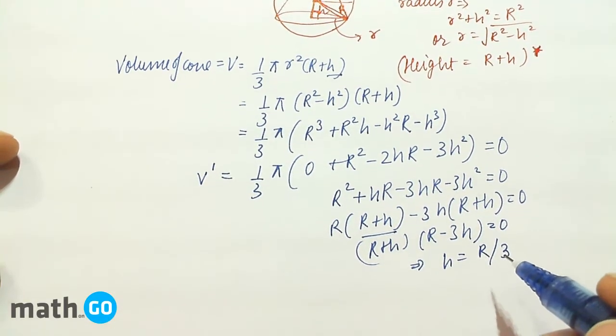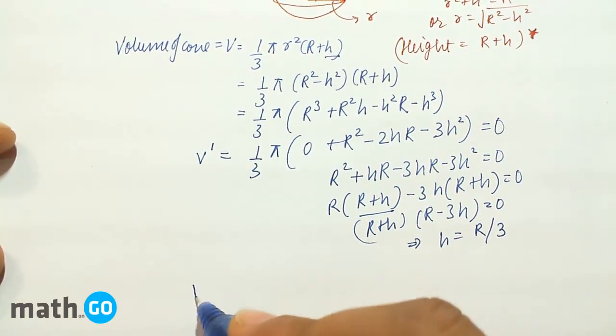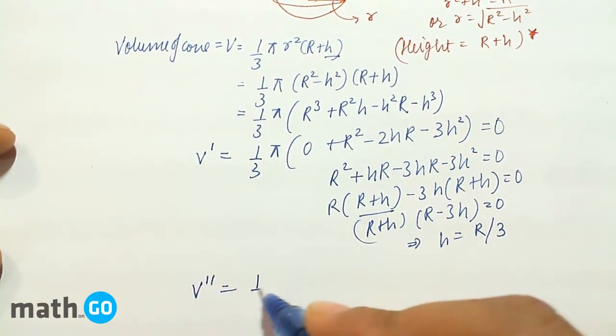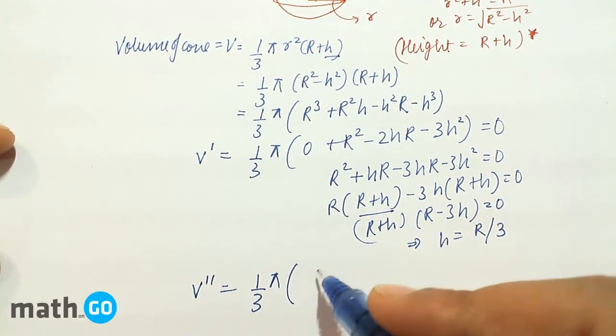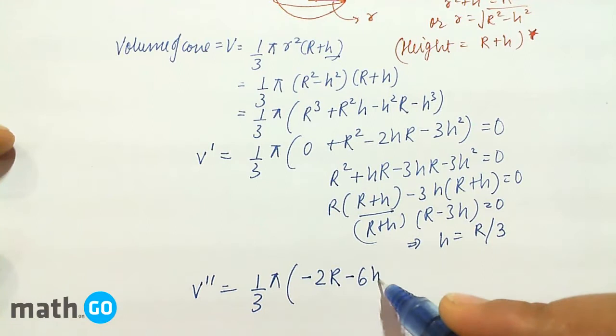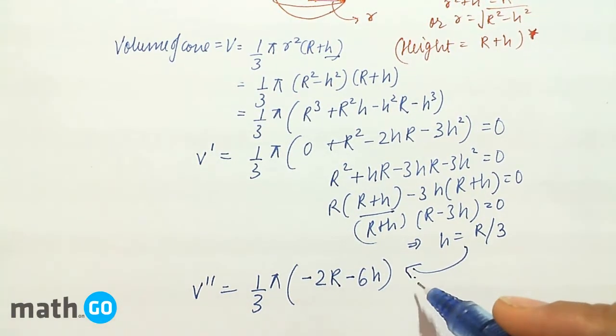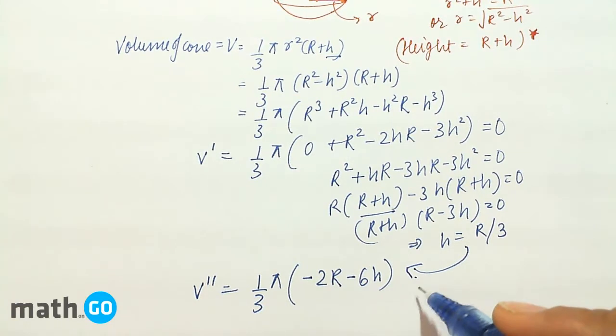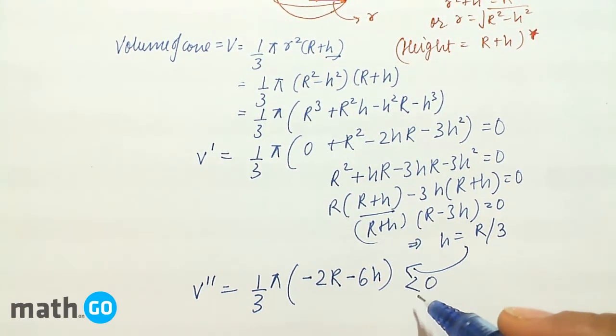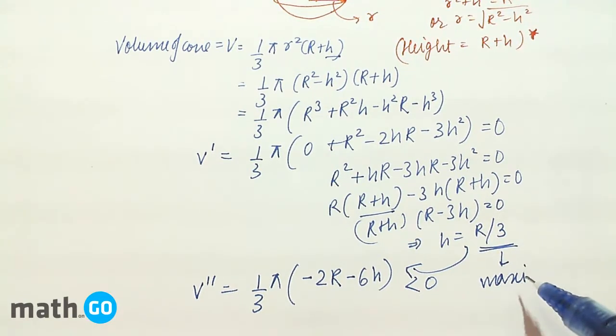Now let us check that this is the point of maxima or minima by the second derivative test. So we have V'' equals to 1/3 π times -2R - 6h. When h equals to R/3, obviously it will come out to be less than 0. That means this is the point of maxima.